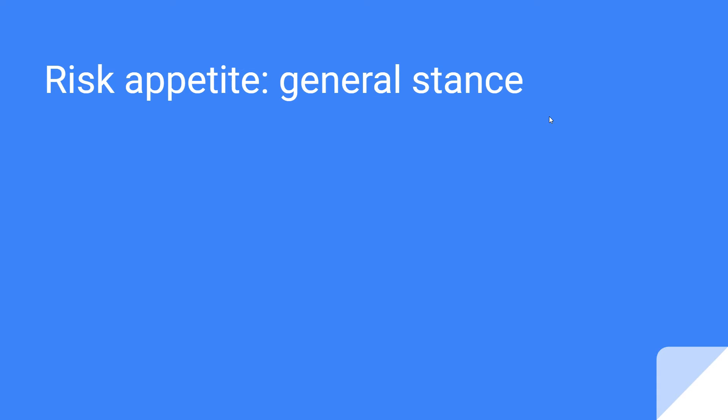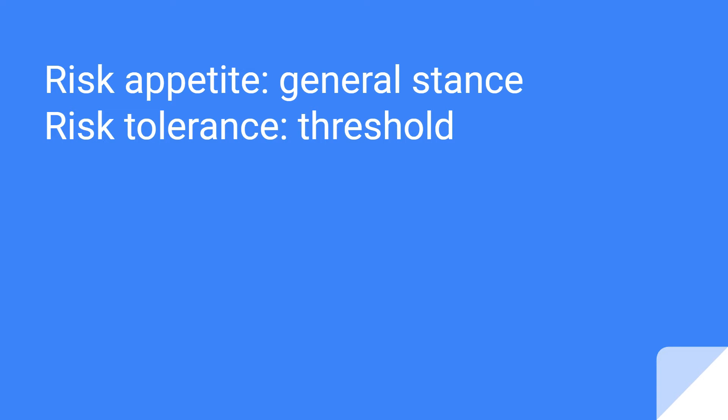Risk appetite is going to be the organization's general stance on risk. For example, as an organization you might have a stance on not risking your data — you might say we're not going to do anything that increases our chance of a data breach or a PII breach. Risk tolerance is going to be an actual threshold — for example, keeping your security alerts under 20 events every day.